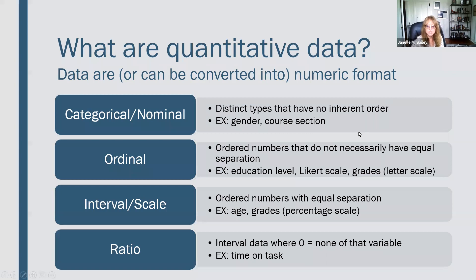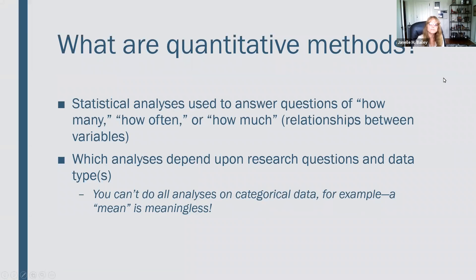These distinctions are important because certain types of analyses can or cannot be done depending on what type of data you have. Quantitative methods are statistical analyses used to answer questions of how many, how often, or how much, and to look at relationships between variables. Which analyses you can do depends on your research question and the data types. For example, you can't do all types of analyses on categorical data — a mean of gender is meaningless. You can talk about percentages, but calculating a mean is not appropriate for categorical data.